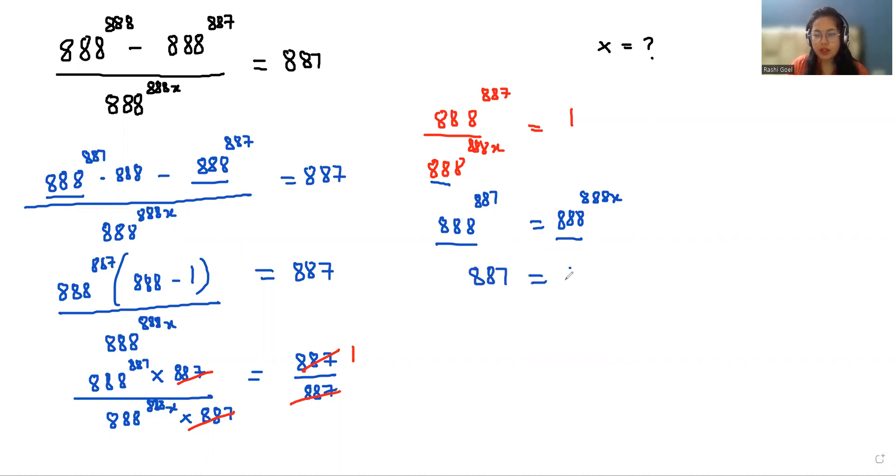So 887 equals 888 x, x equals 887 divided by 888. So the value of x is 887 divided by 888.